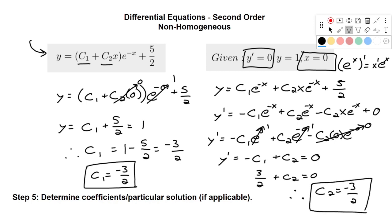So now if we were to write out our full equation, we would just substitute in here, negative 3 halves and negative 3 halves.